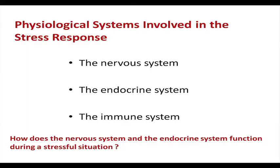This brings back to our slide of the various physiological systems involved in the stress response. We have seen that the nervous system, the endocrine system, and the immune system are the three systems involved in stress. In today's session we shall see how the nervous system and the endocrine system function during a stressful situation.